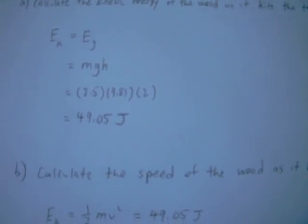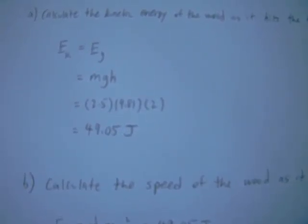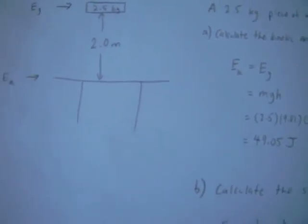So we can use our gravitational potential energy equation, mgh, to find our total energy that will be conserved from when it was held up all the way to when it hits the ground.